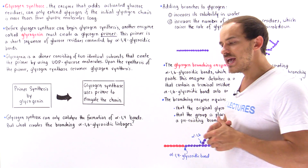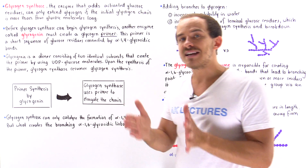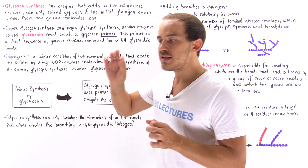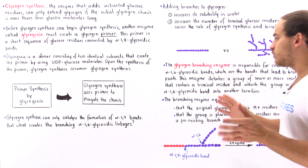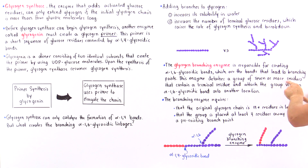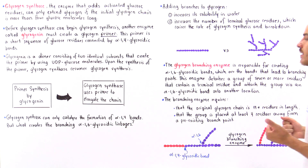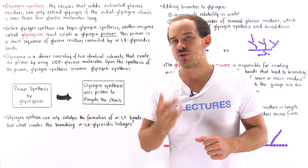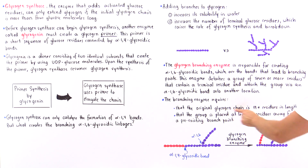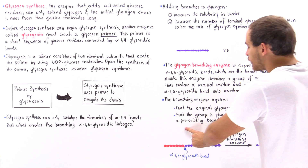What the glycogen branching enzyme does is first break an alpha-1,4-glycosidic bond and detach a group of glucose molecules — usually seven residues in length. This group must contain a terminal non-reducing residue. The enzyme detaches a group of seven or more glucose residues containing a terminal residue and attaches that group via an alpha-1,6-glycosidic bond somewhere on the interior of the glycogen molecule. The branching enzyme requires that the original glycogen chain is at least 11 residues in length and that the new branch is placed at least four residues away from any pre-existing branching point.